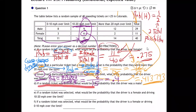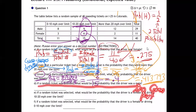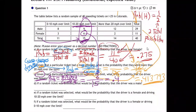If a random ticket was selected, what would be the probability that the driver was male? So is there anything given in part D? There's no given in part D. So the probability is just going to be the bottom being the total number and the top being whatever number they asked for.